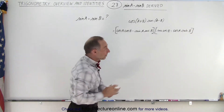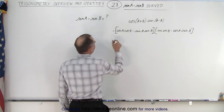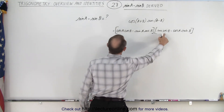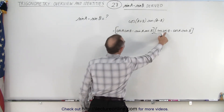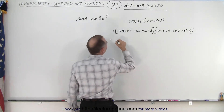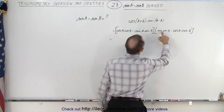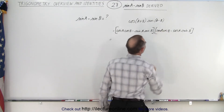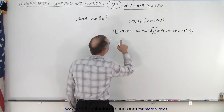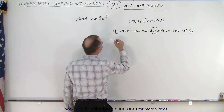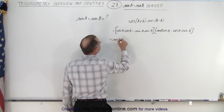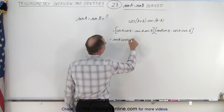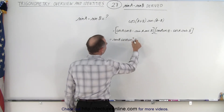Now we multiply all that out and see what we get. The first term is this multiplied times that — cosine b is repeated — this should be sine a cosine b. So we have sine a cosine a cosine squared b.